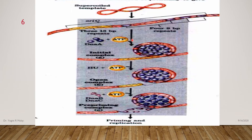Let's see diagrammatically how exactly DNA A binds and causes the unwinding of DNA. This is the supercoiled template of double-stranded DNA, and this is nothing but the OriC gene. You can see clearly 4 repeats of 9 base pair sequences and 3 repeats of 13 base pair sequences shown in yellow color. DNA A protein, with the help of ATP, recognizes the 9 base pair sequence and binds there. This is known as closed complex formation.